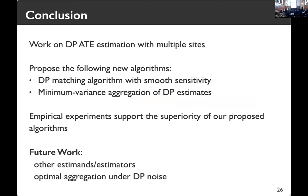In summary, we set up and work on DP-ATE estimation with multiple sites, and propose and empirically evaluate two new algorithms: a DP matching algorithm at each site which adds much less noise to the ATE estimate, and a minimum variance aggregation of DP estimates at the central server. Future work includes investigating other estimators under differential privacy and an optimally provable aggregation framework under differential privacy noise.